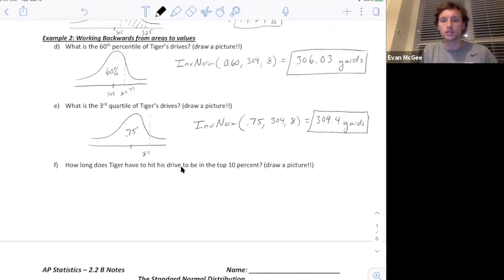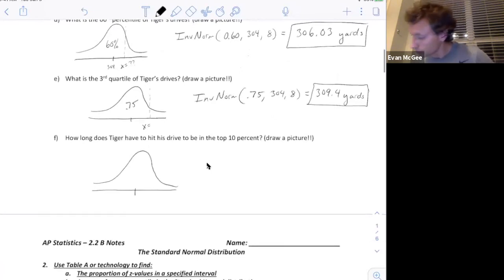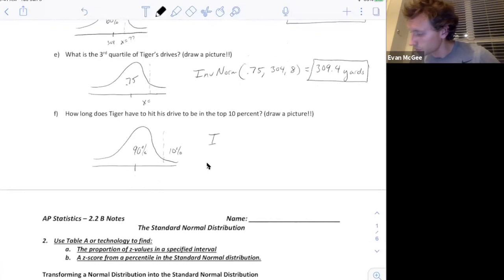Lastly, you might see another type of question where they ask for what is the top 10 percent? How long does he have to hit it to be in the top 10 percent? This is when the pictures come in to help because I see a lot of students type 10 percent in their calculator, but it's not asking for the 10th percentile. If this is the top 10 percent, it's asking for the 90th percentile. In our calculator, we're actually going to put inverse norm 0.90 because it's the 90th percentile with the mean of 304 and the standard deviation of 8.